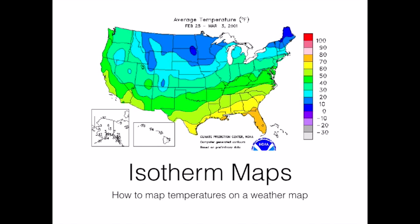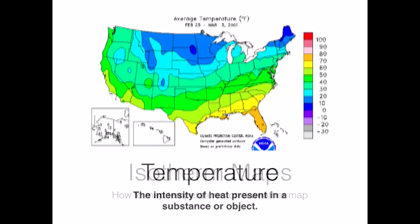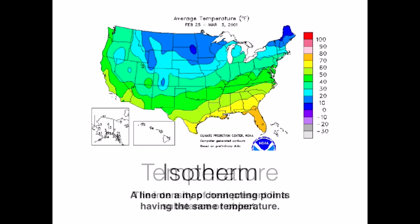Today we're going to learn how to map the temperatures on a weather map. Remember that temperature is a measure of the intensity of heat present in a substance or object. In this case we're mapping the temperature of the air just above the ground. We call these isotherm maps. Isotherms are lines on a map that connect areas with the same temperature.